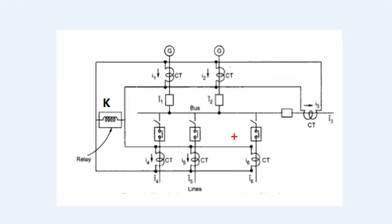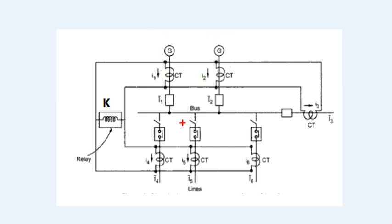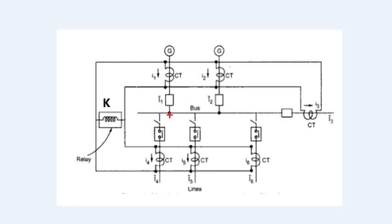Let's look at this principle. There is Generator 1 and Generator 2. They are connected to a common bus bar. The loads are connected here.